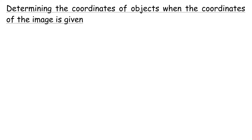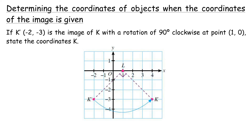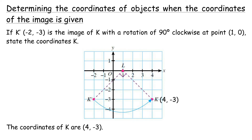Determining the coordinates of the object when coordinates of the image are given. Example: If K'(-2, -3) is the image of K, with a rotation of 90 degrees clockwise at point (1, 0), state the coordinates of K. Step 1: Reverse the rotation direction to locate the object point K. Step 2: Using a protractor, rotate line K' at point L by 90 degrees anticlockwise. The coordinates of K are (4, -3).